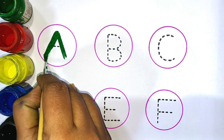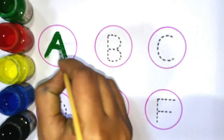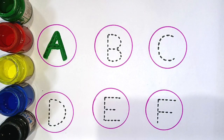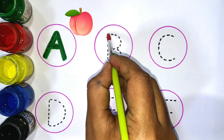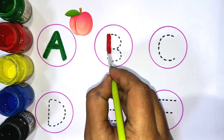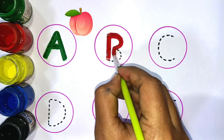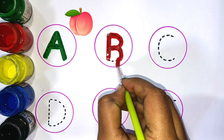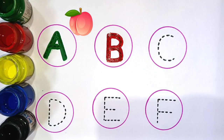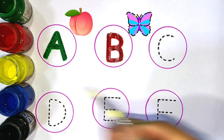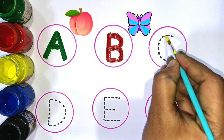A. A for apple, next red color. B. B for butterfly, next yellow color.